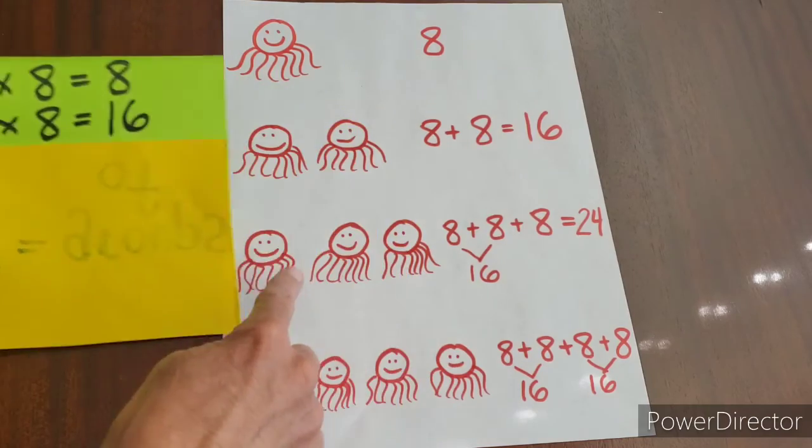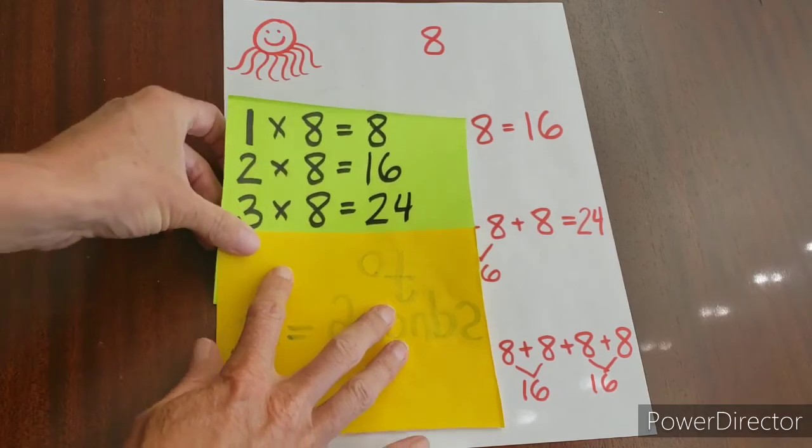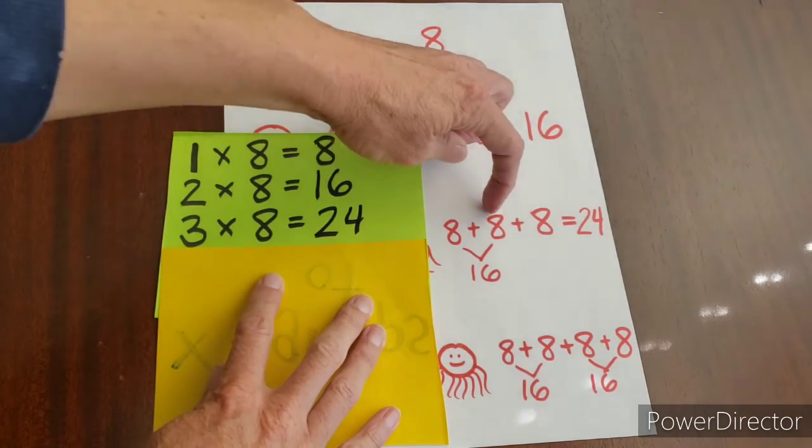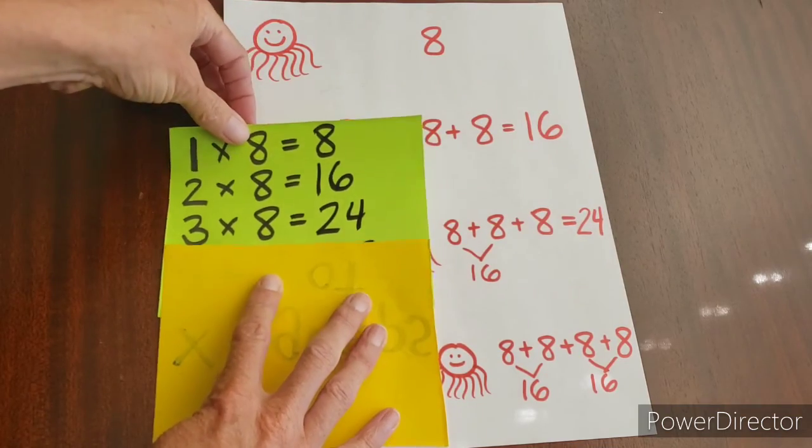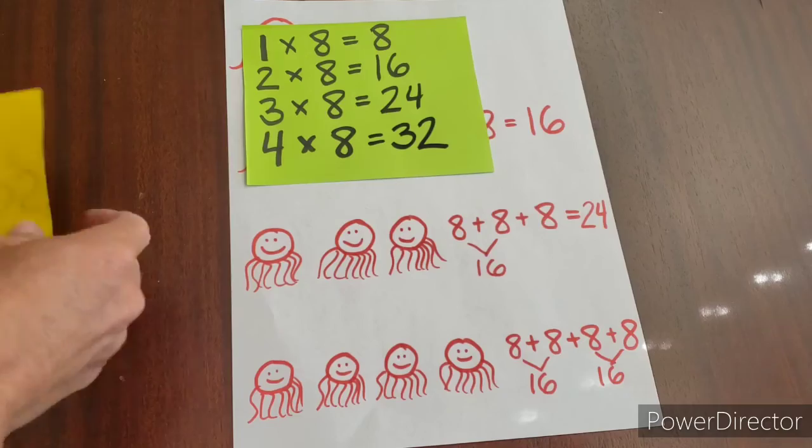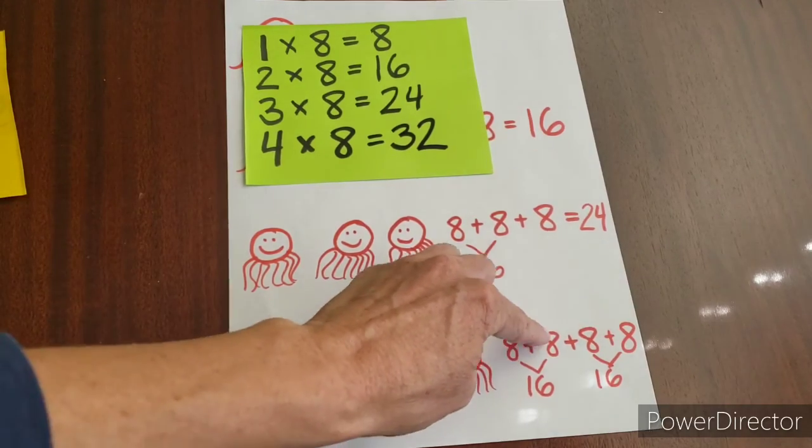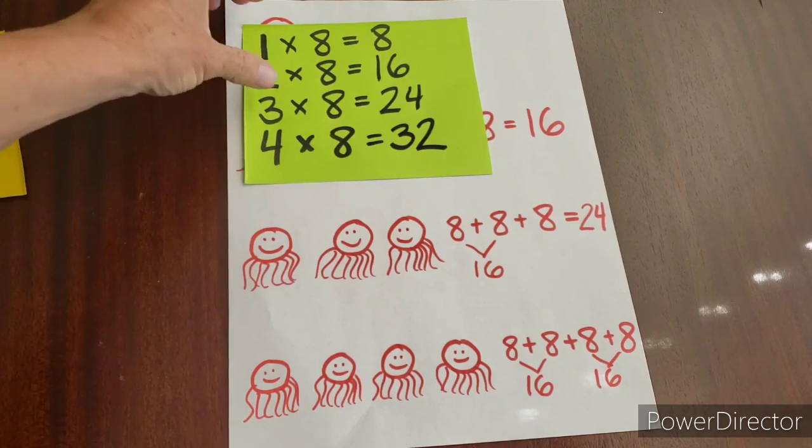Now we look at the three octopi that we've added, and we can say three times eight, or eight plus eight plus eight, is 24. And the last one that we did was four octopi, or eight plus eight plus eight plus eight, is 32. Okay.